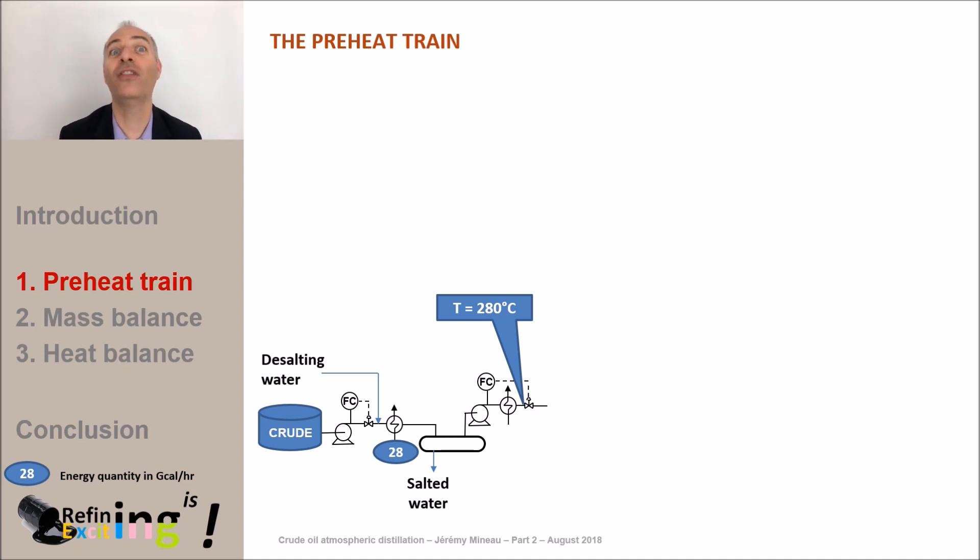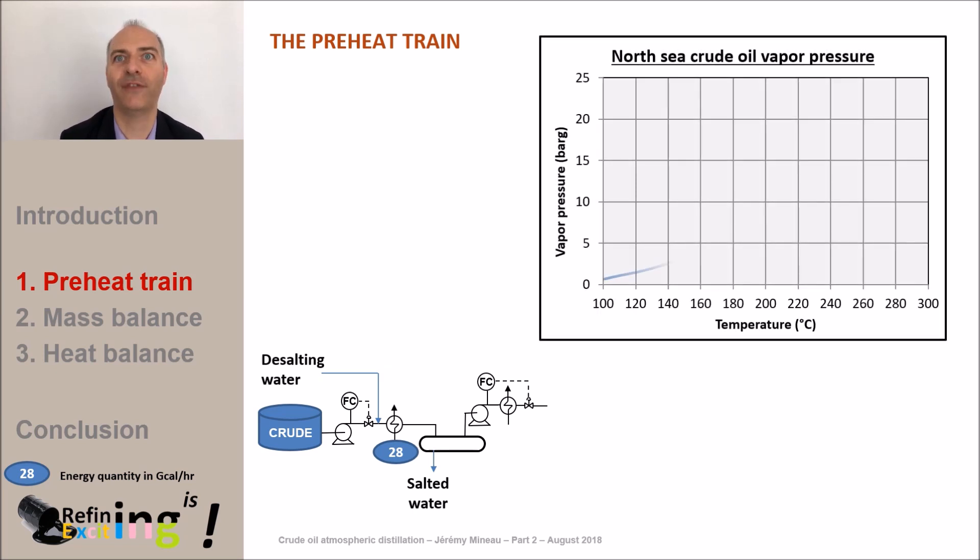At this temperature there are no more calories or any stream that is hot enough to heat up the crude to the transfer temperature in the atmospheric column which is typically between 370 and 385 degrees C. Again we aim for a pressure compatible with the fact that the crude does not vaporize in the preheat train and we consider a margin on top of that. In our case we see that the crude vaporizes at 20 bar G at 280 degrees C. So we must increase the pressure to about 25 bar G.